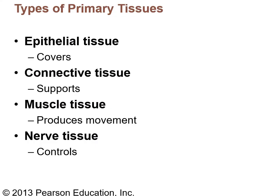There are four primary types of tissue. Epithelial tissue is generally a covering or lining. Connective tissue is supportive and is usually found under epithelial tissue. Muscle tissue is the third group and provides movement. The fourth group is nervous tissue, which is the controlling tissue because it passes electrical impulses from one place to another.